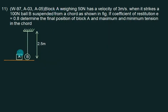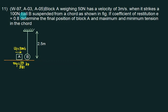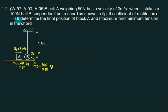New problem: Block A has weight 50 N, mass m1 = 50/9.81 kg, moving with velocity u1 = 3 m/s. It strikes a 100 N ball B, so m2 = 100/9.81 kg, which is initially at rest, u2 = 0. Ball B is suspended from a chord of length 2.5 m. The coefficient of restitution is 0.8.